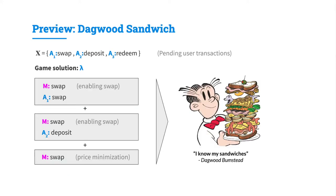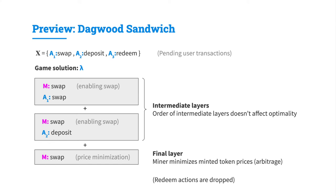We provide a preview of our game solution, which we call the Dagwood Sandwich. Our game solution λ consists of multiple layers resembling the multilayered sandwich preferred by the character Dagwood Bumstead. The solution consists of intermediate layers, where each user transaction is front-run by an enabling swap by the adversary M. The order of intermediate layers does not affect optimality, yet they must be computed greedily one after the other. The solution concludes with a final layer where the miner minimizes minted token prices, leaving no arbitrage opportunity behind. Redeem actions are always dropped as they contribute no profit to the miner.